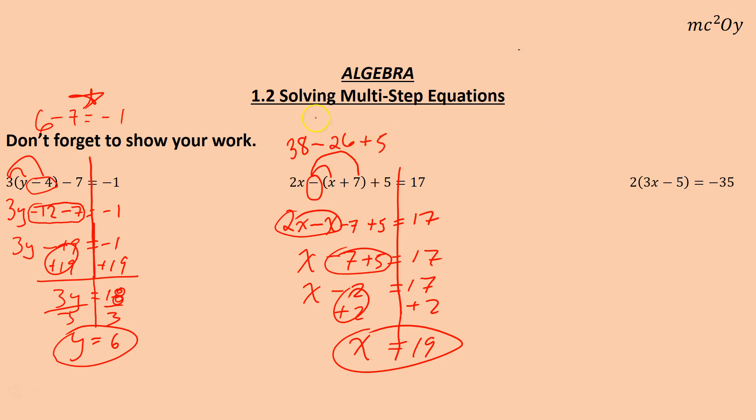Once again, checking our work. 2 times 19 here is 38 minus x plus 7, or 19 plus 7 is 26, plus 5. Well, 38 minus 26, that's 12. 12 plus 5, that happens to be 17. So we're good.